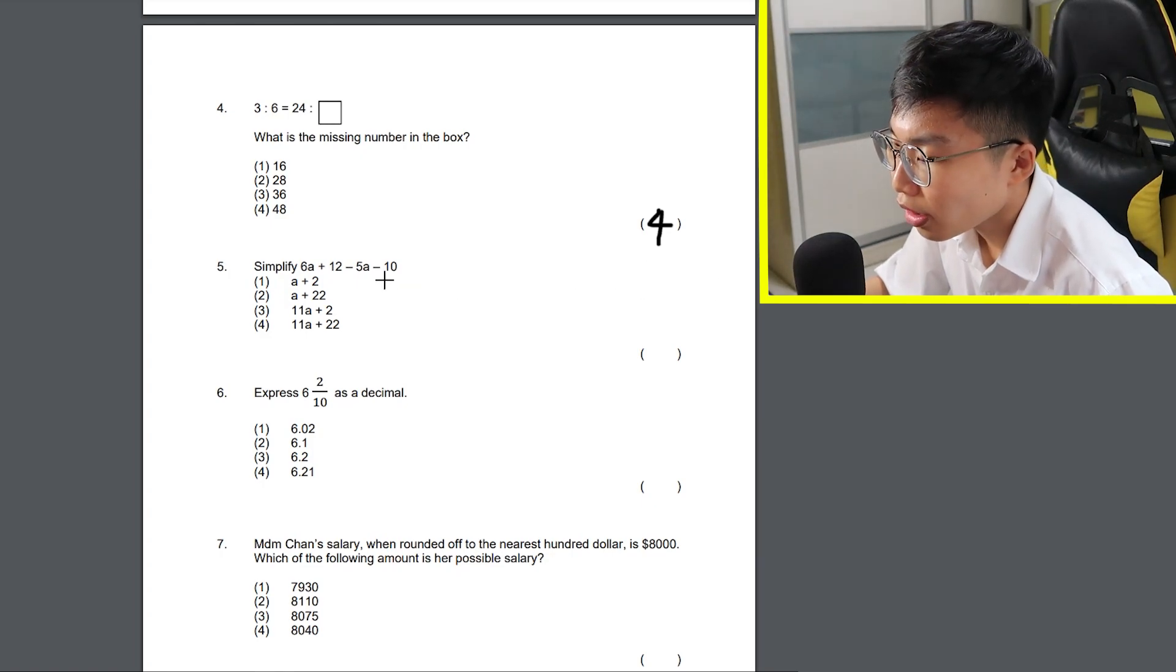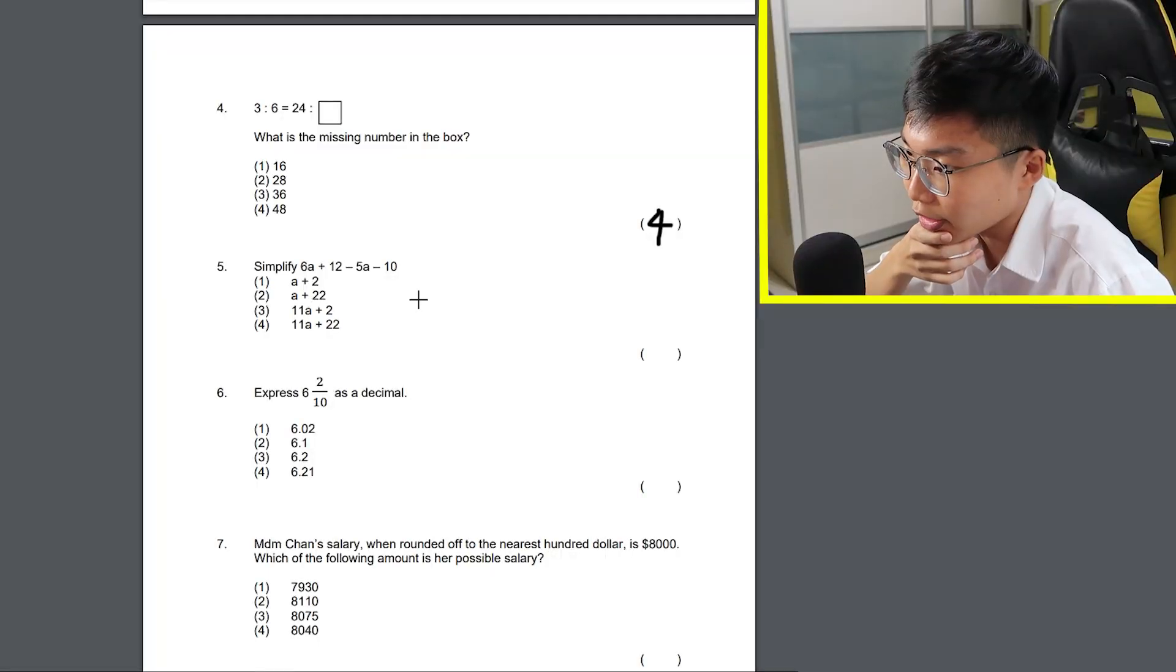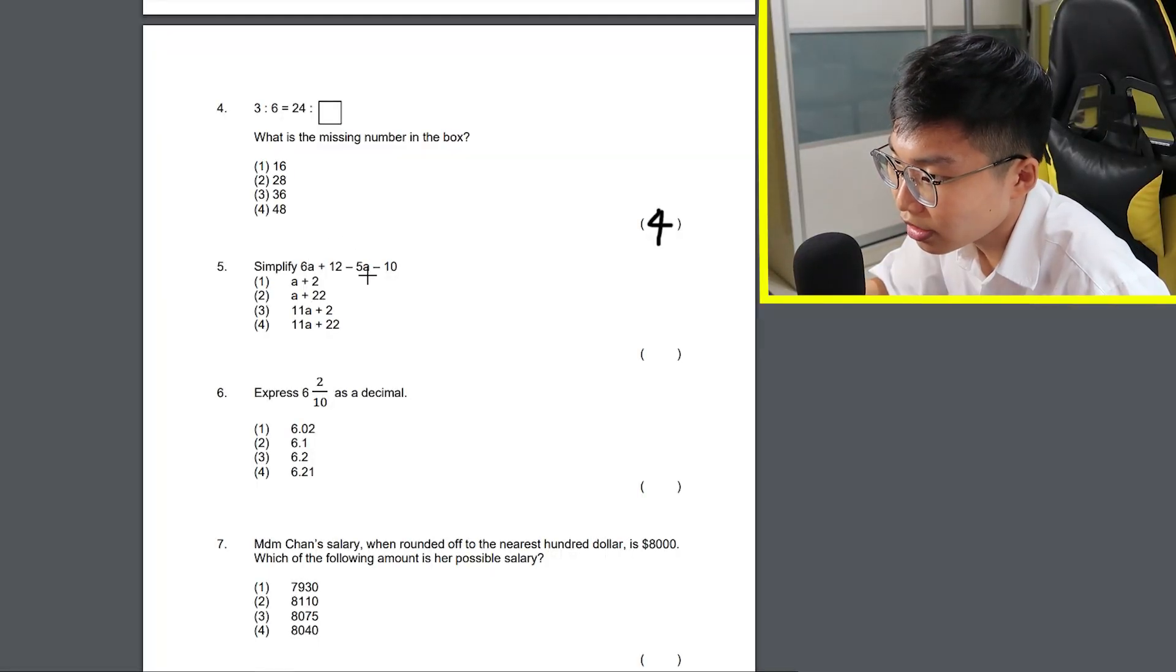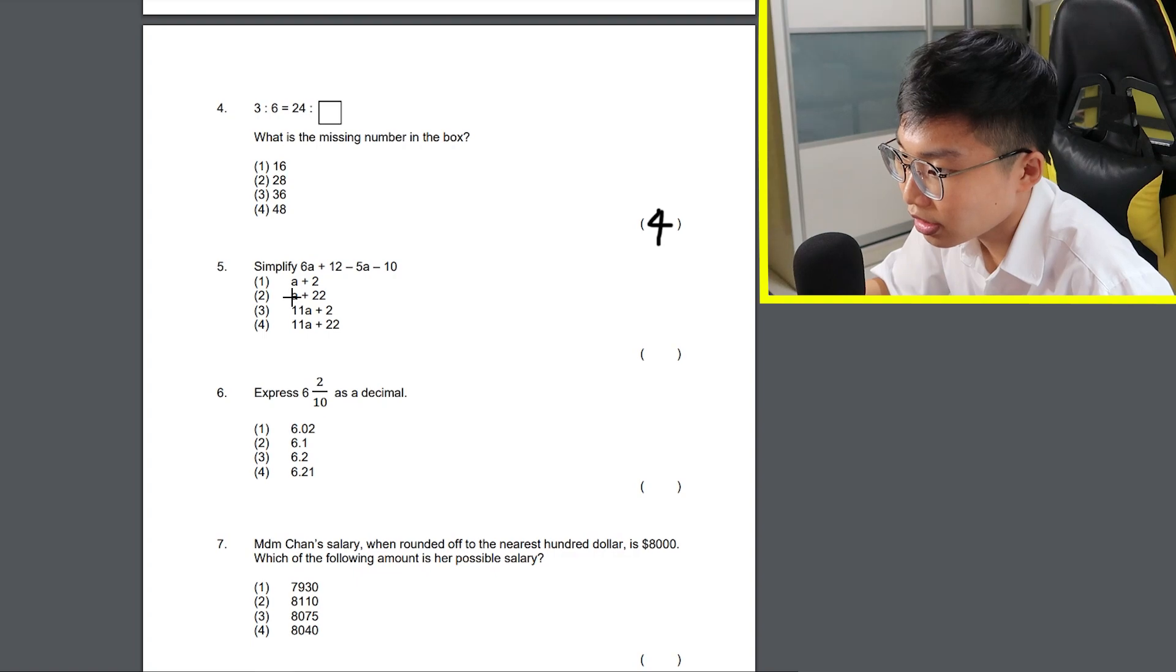Question 5. What the heck? Wait, I can work this out. 6A minus 5A is A. Then 12 minus 10 is 2. It should be number 1.